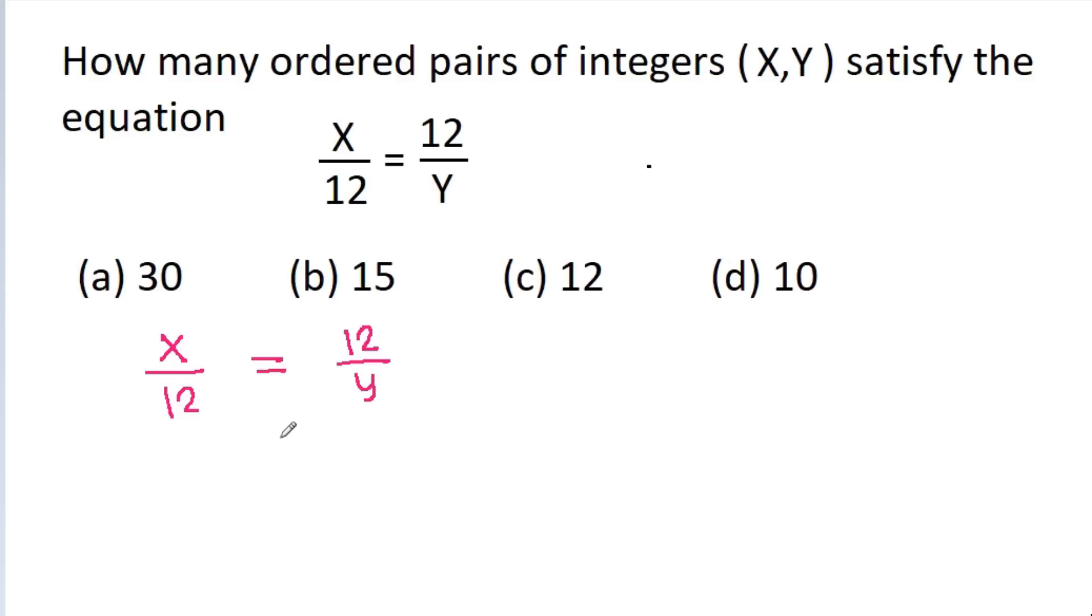If we cross multiply, we get x times y equals 12 times 12, which is 12 squared.